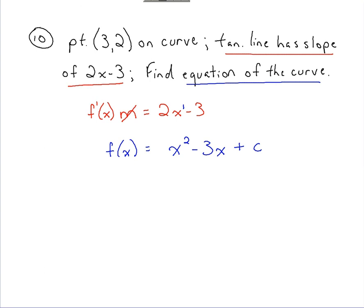Taking the additional information provided here, we do have a point on the curve. So we know that x is 3 and we know f of x could be 2 when x is 3. If I plug that information in, I can solve for c.